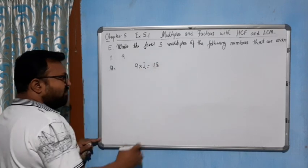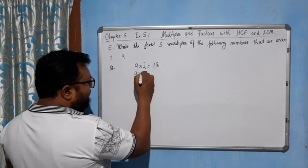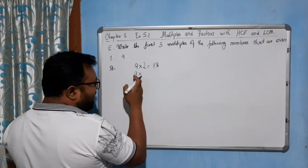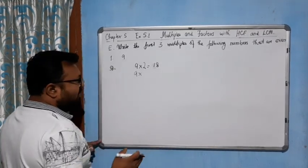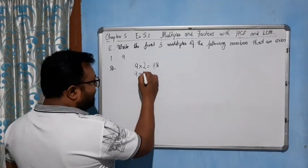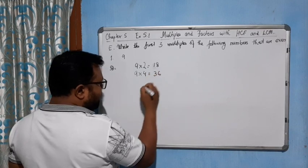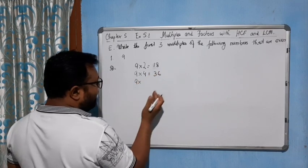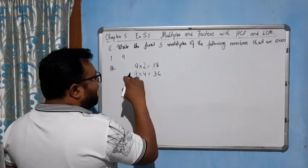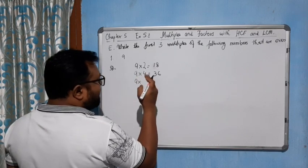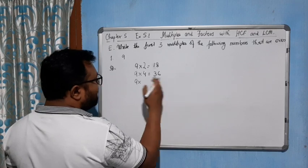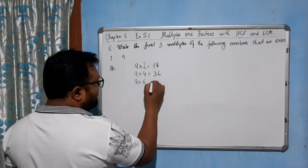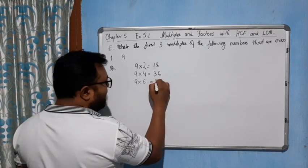We will move to the next number, 9 times 2 is 18, so it's an even number, we will take this one. Again if you go for 3, 9 times 3 is 27, it's an odd number so we can't take that one. 9 times 4 is 36. 9 times 5 is 45, we can't take that one. We will take 6, 9 times 6 is 54.